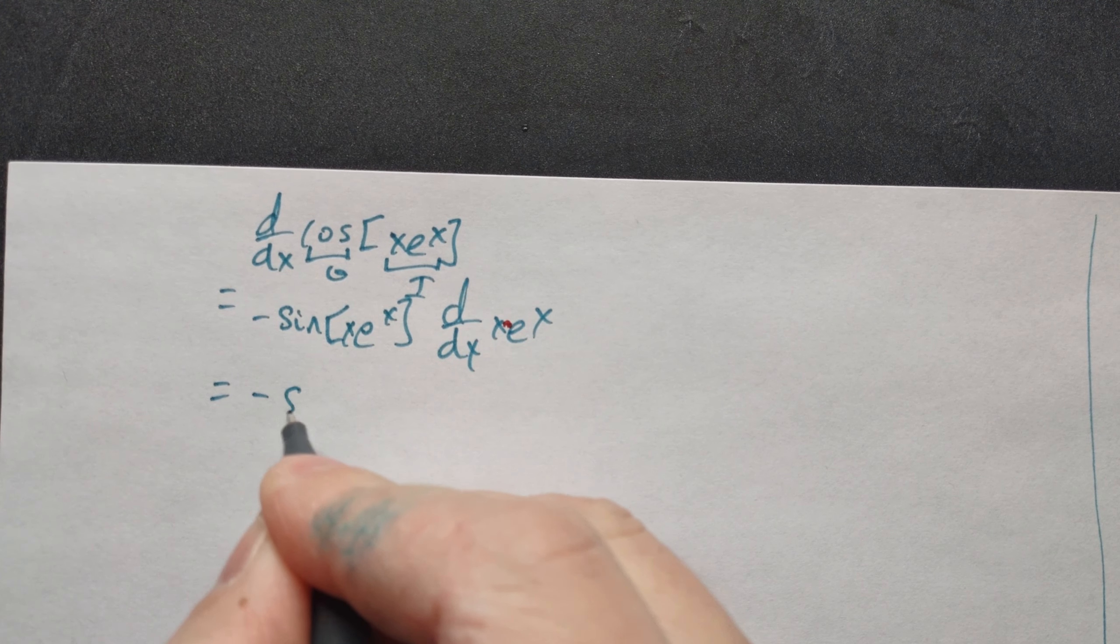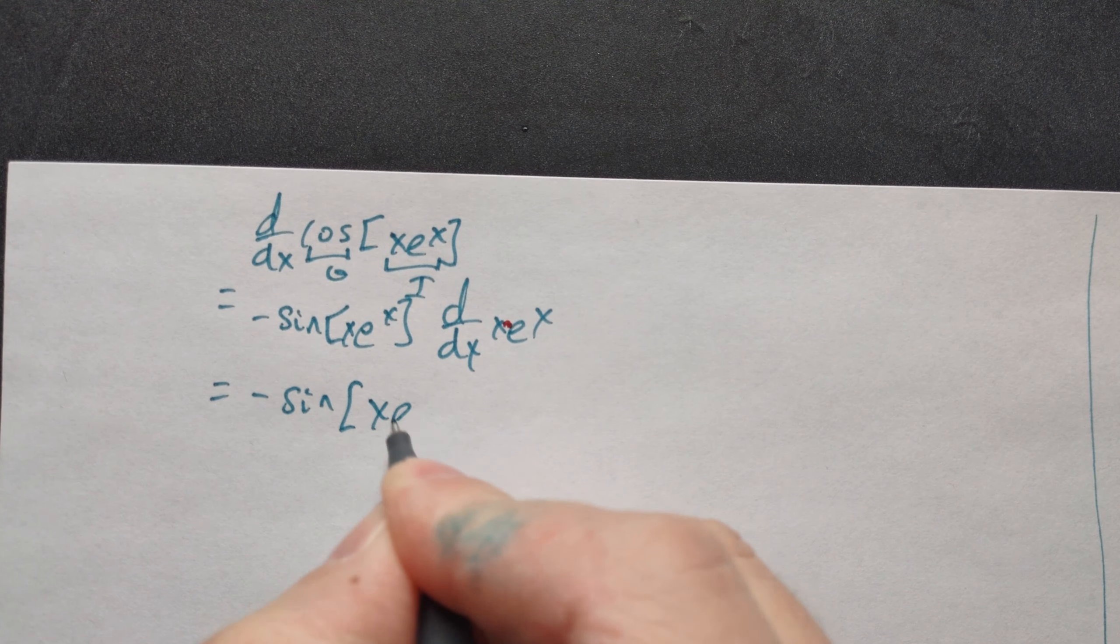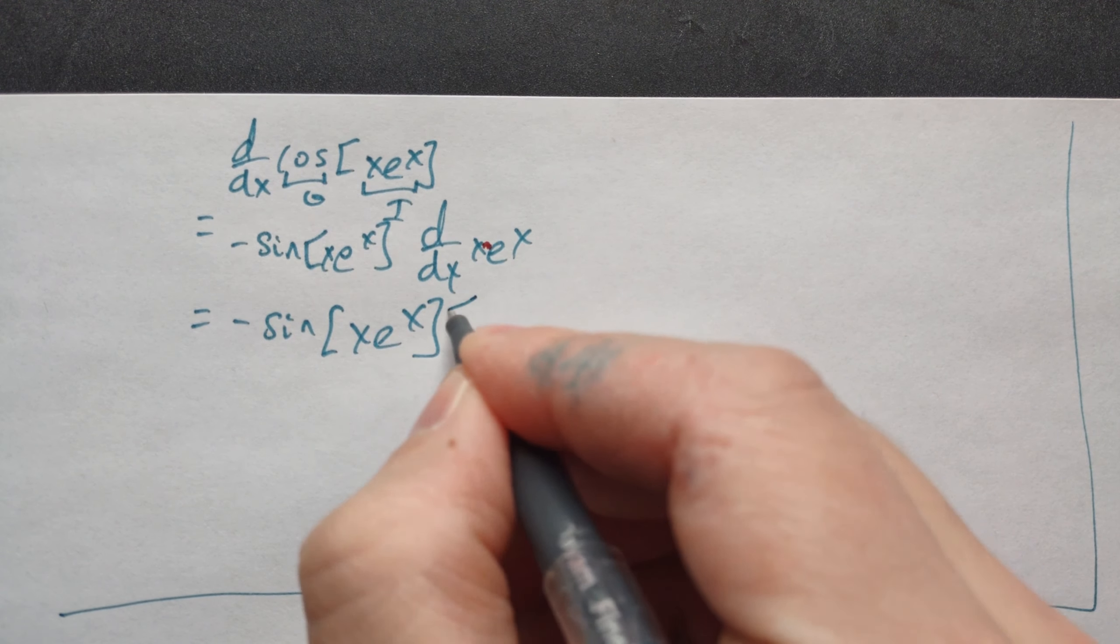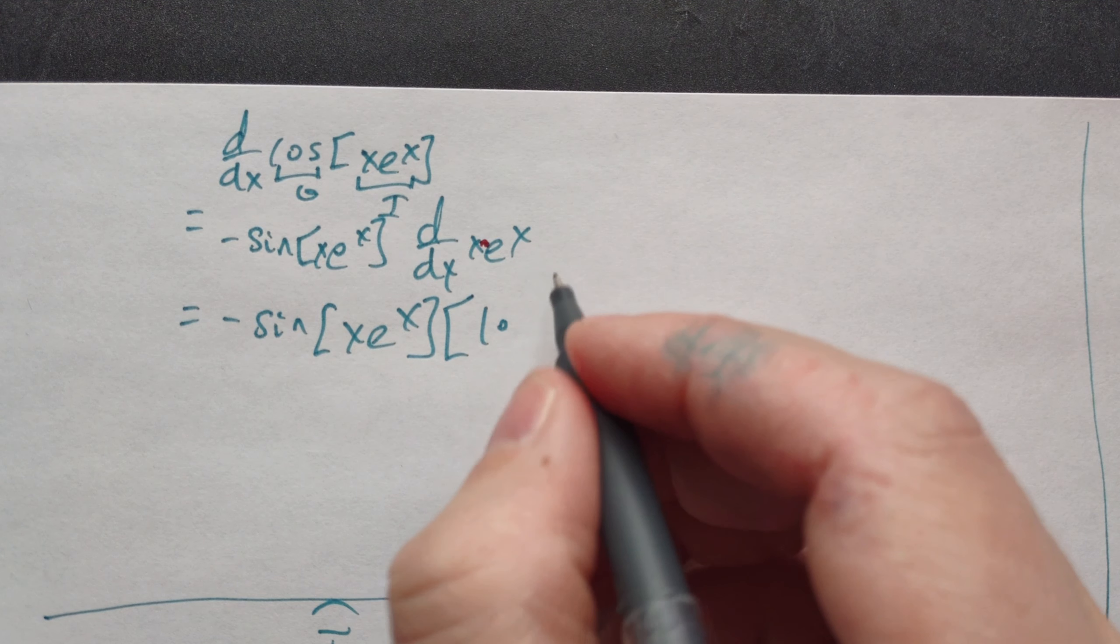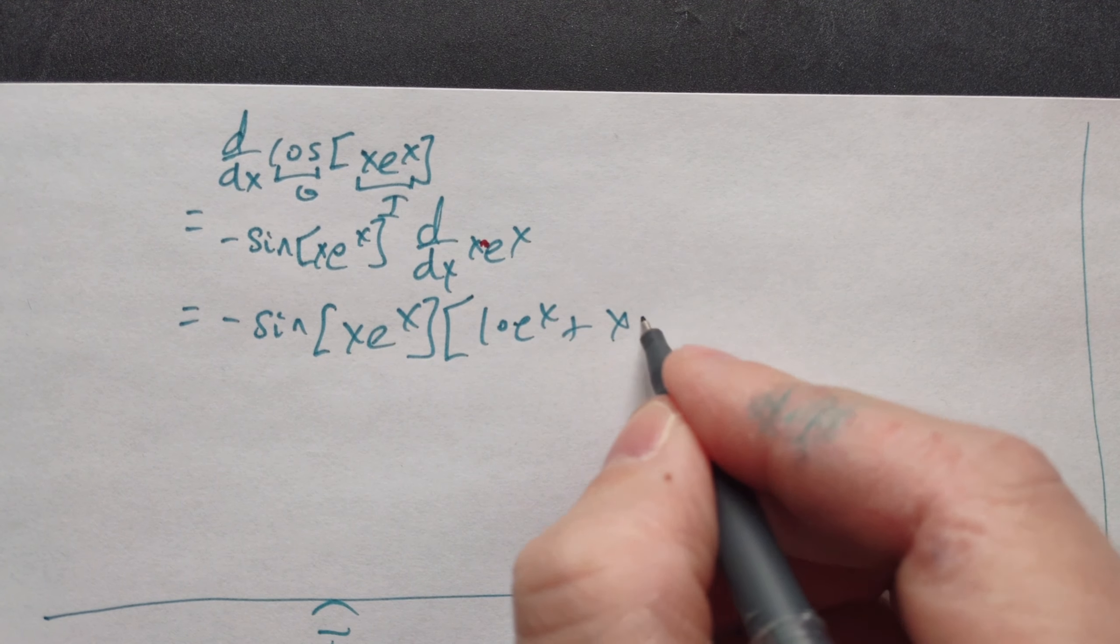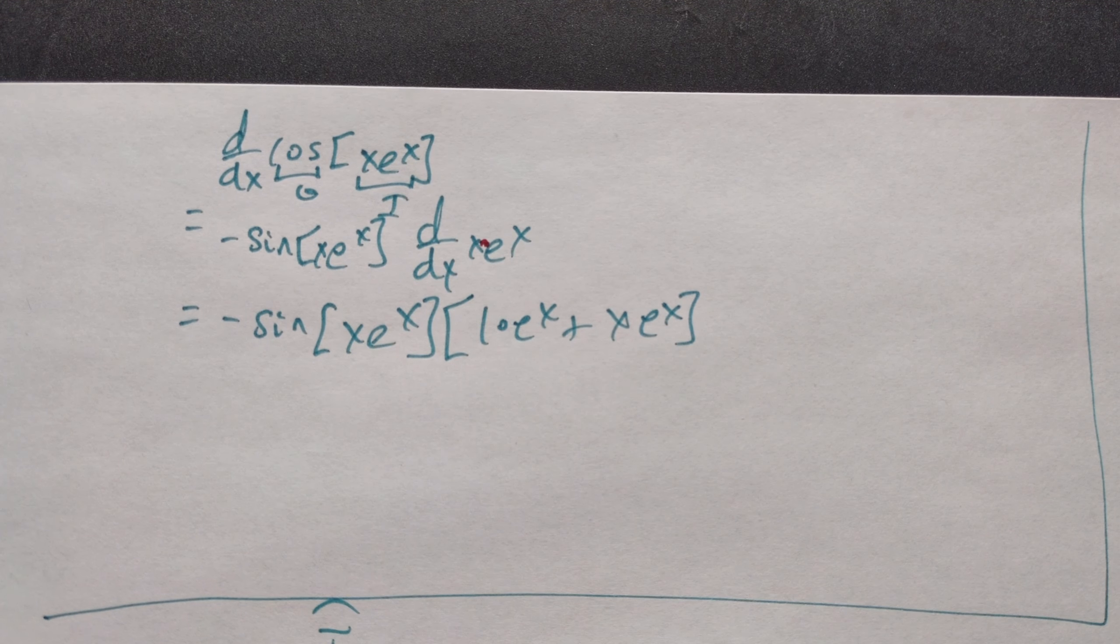Remember these quantities are being multiplied, so use the product rule on that part. Negative sine of x e raised to the x. Now here when you differentiate x you get one, and then you just multiply by e to the x. You add to it the x multiplied by the derivative of e to the x, which is just e to the x.